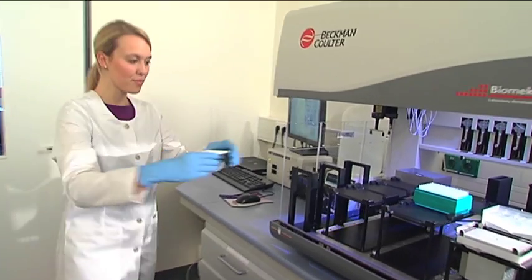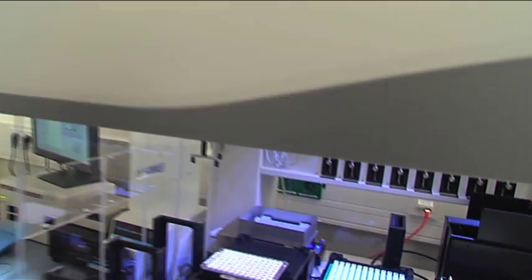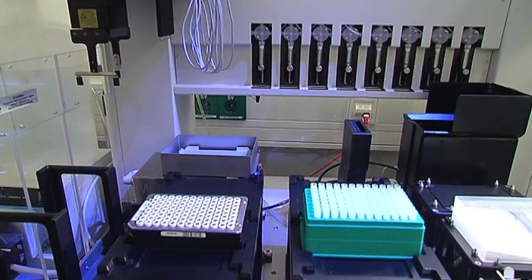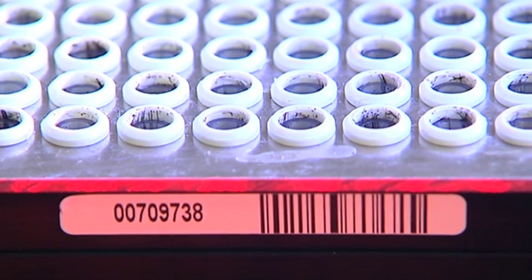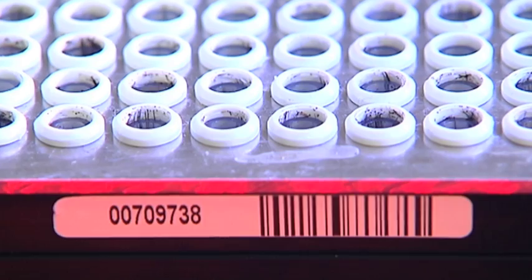The open tubes are processed in a liquid handling machine. The plate barcode ensures the reliable identification of the samples throughout the process.